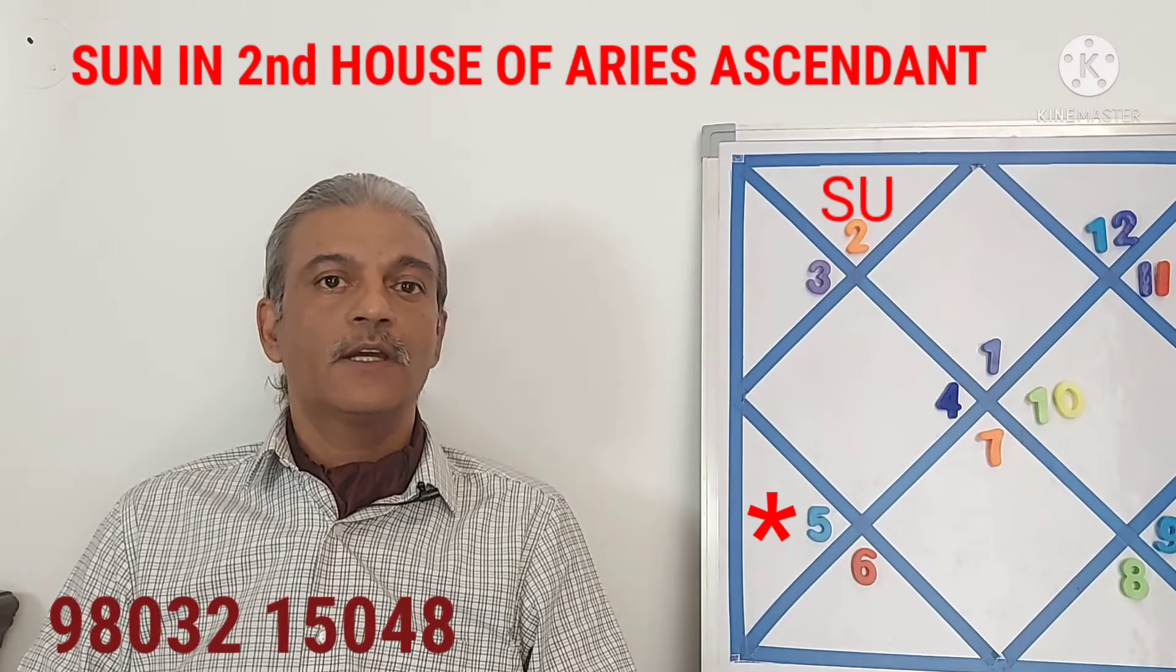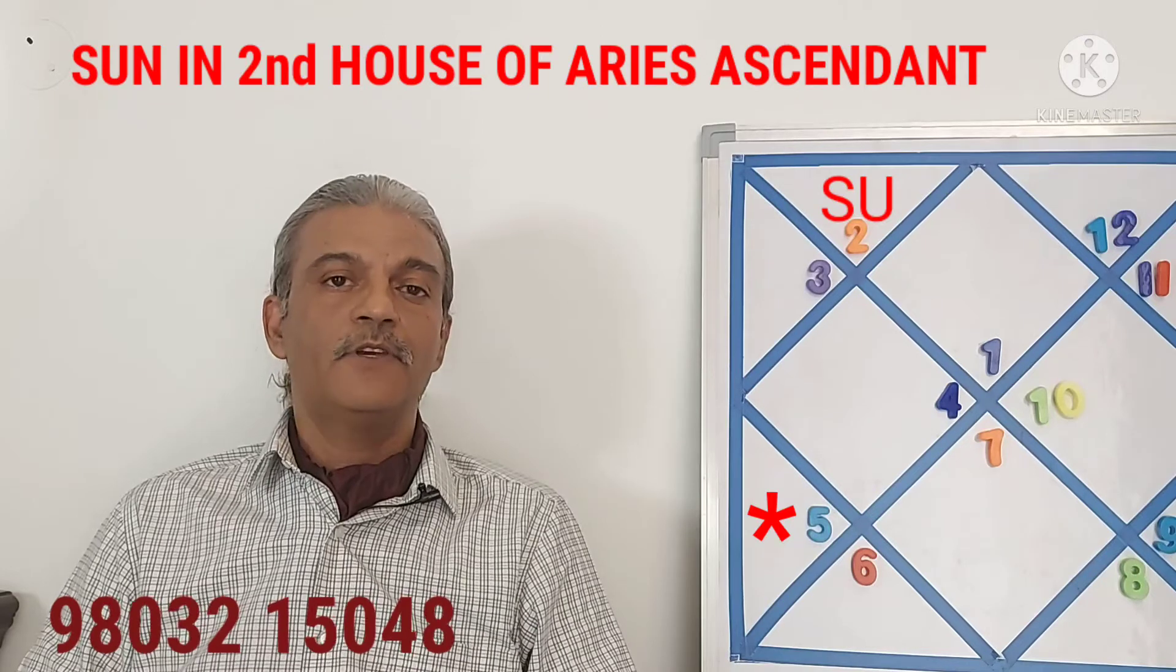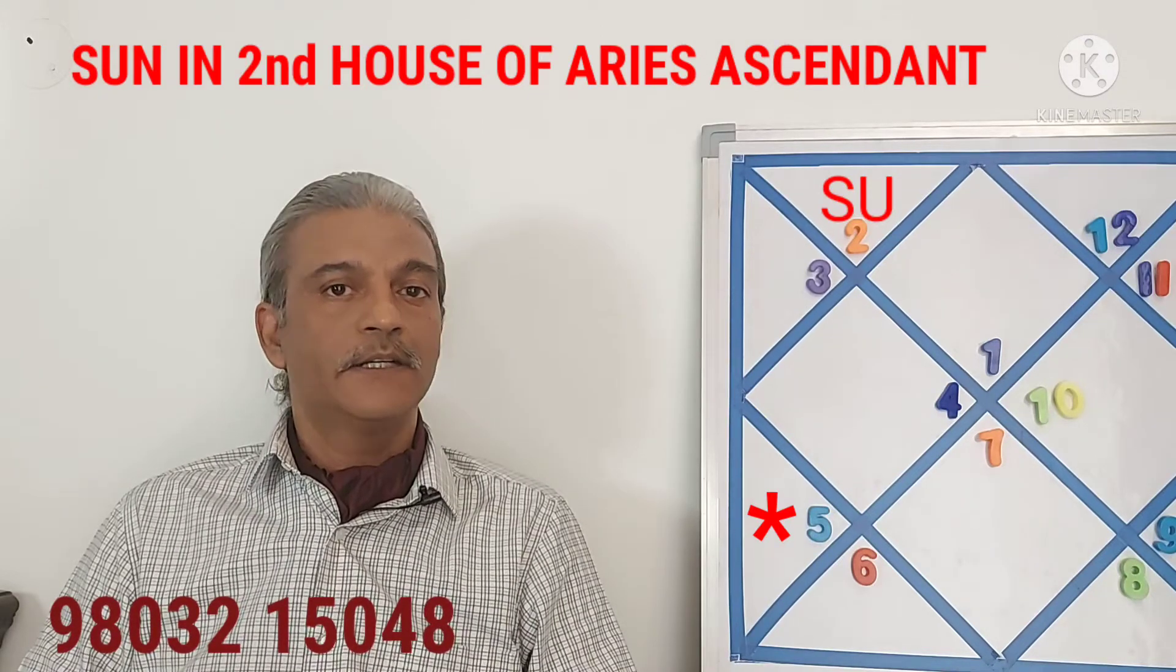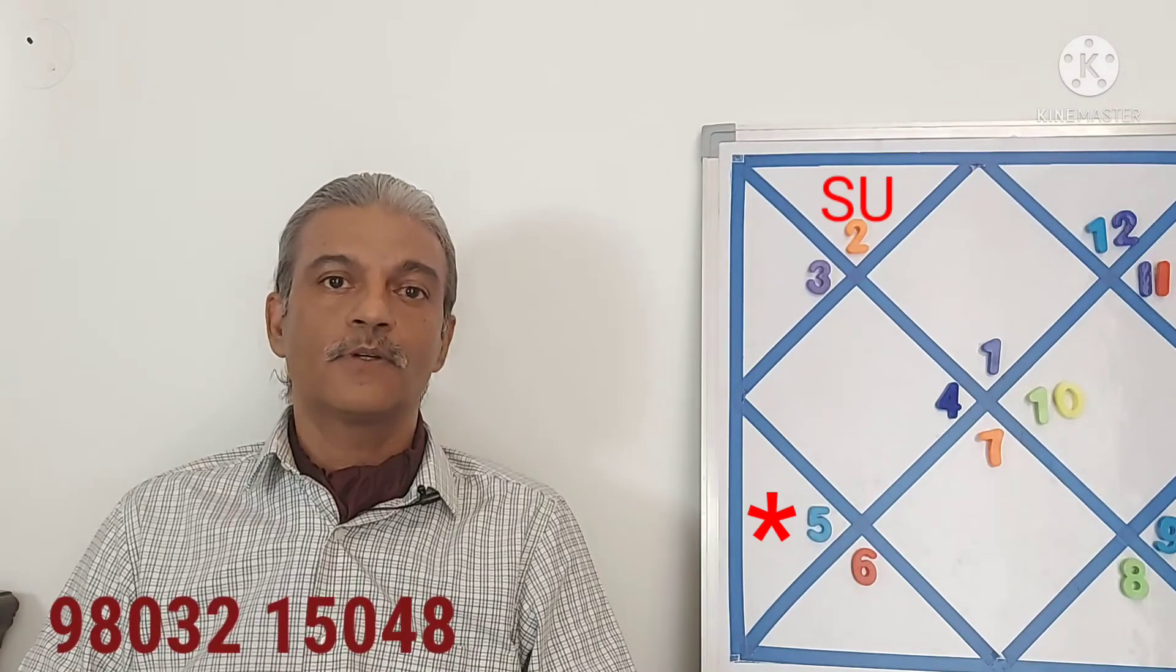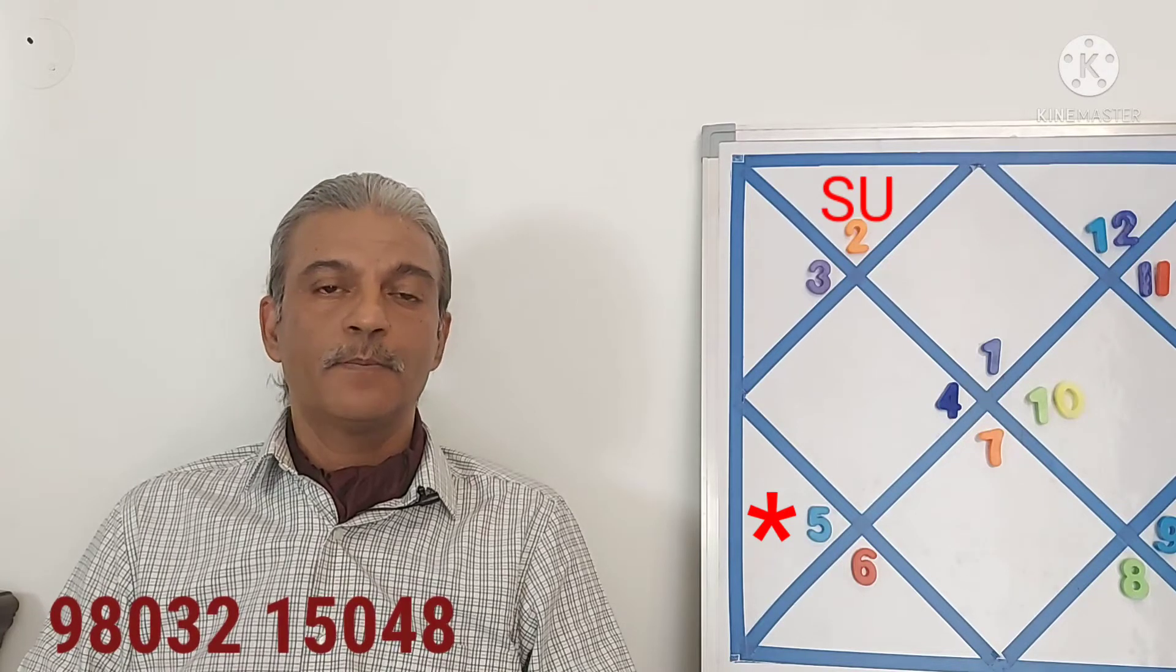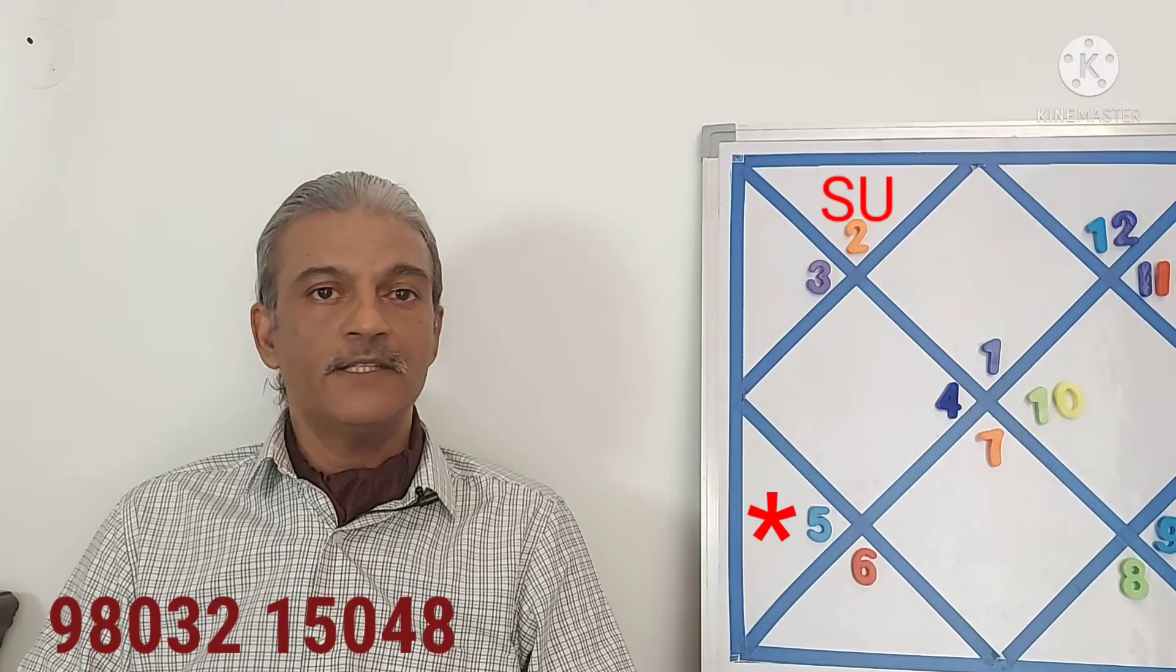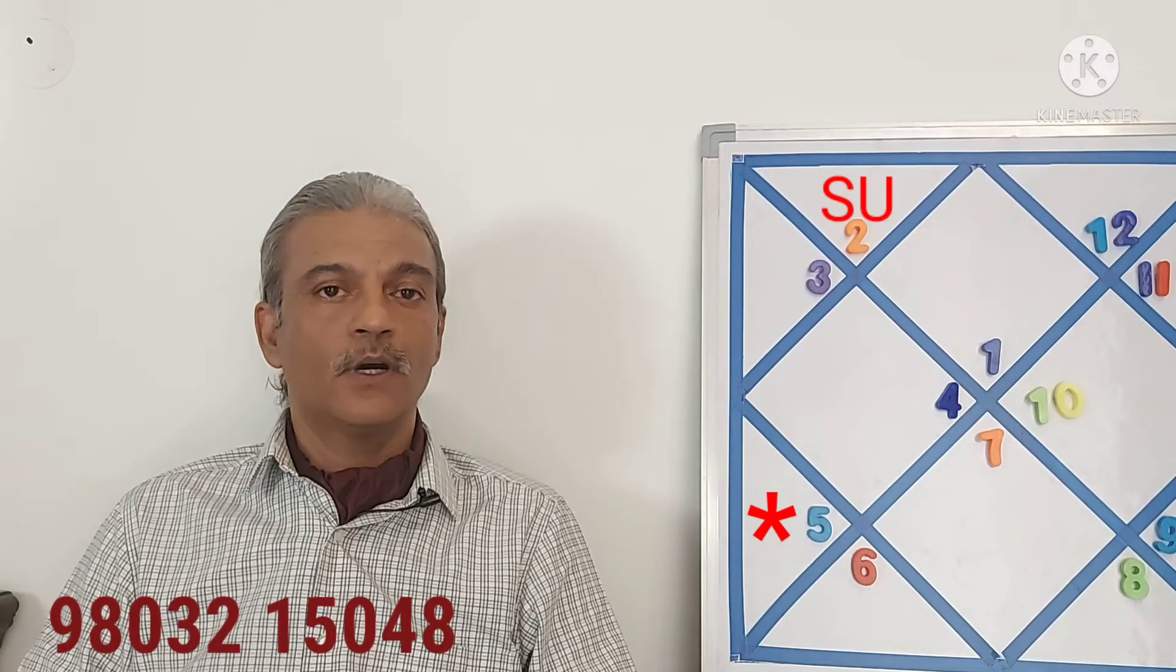The person who has Sun in the second house will continuously and regularly make efforts to earn money and will be quite successful at it. Of course we have to see the degree of Sun and the strength that Sun has in the horoscope. Also because Sun is a righteous planet, the person will always earn money through legal and lawful means. He will not resort to illegal means to earn money.